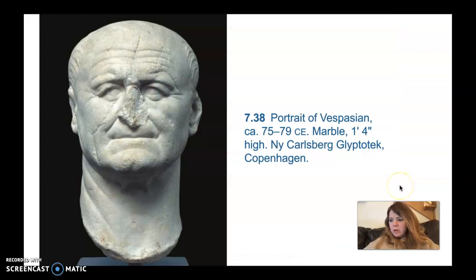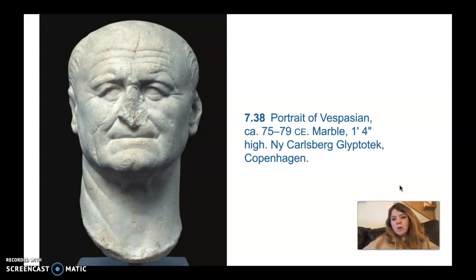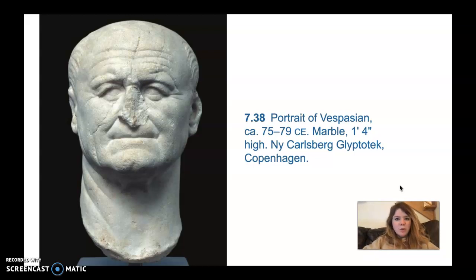Vespasian was a down-to-earth army officer who wanted to distance himself from Nero's extravagance. Nero, the emperor before Vespasian, had out-of-control spending and made enemies in the government. Vespasian wanted to present himself as more simple, breaking with the tradition established by Augustus of showing the emperor as god-like and never-aging. He returned to the veristic or hyper-realistic tradition used during the Republic — a much more humble era — and that was probably a wise political tactic, since extravagance could have gotten him killed.